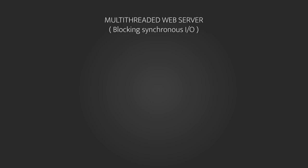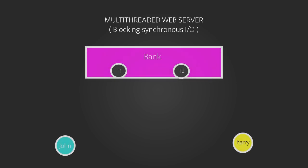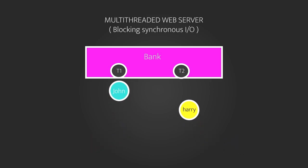Node applications are highly scalable because of their asynchronous behavior. Let's look at a simple example of synchronous blocking architecture. Imagine you and your friend go to the bank. You go to teller 1 and your friend goes to teller 2. Teller 1 deals with you and nobody else throughout the entirety of the transaction, and the same goes for teller 2 and your friend. This works well as long as you have enough tellers to service the customers.